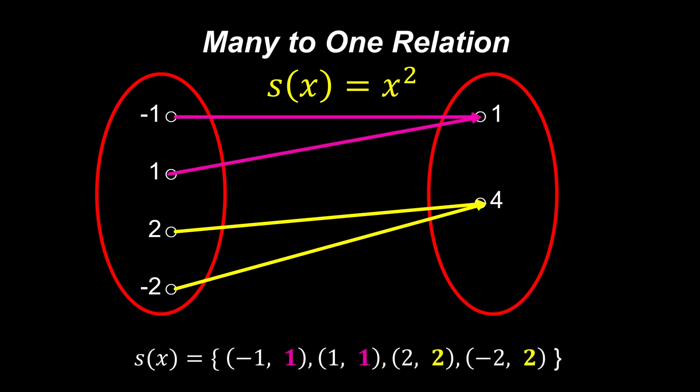So if you write in the order pair, we can see that negative one and one have the same image. Meanwhile, two and negative two have the same image.